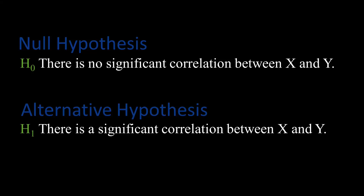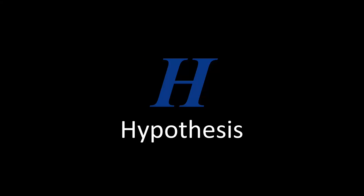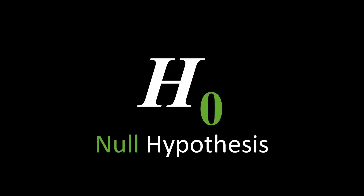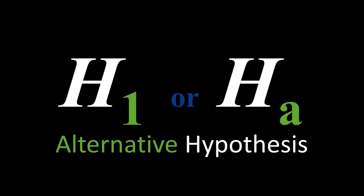The symbol for a hypothesis is a capitalized H in italics. A null hypothesis looks like this: an italicized uppercase H with a zero subscript. An alternative hypothesis looks like this: an italicized uppercase H with either a little one or a lowercase subscript A.